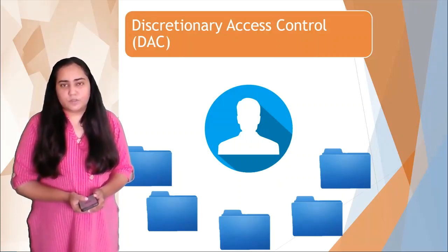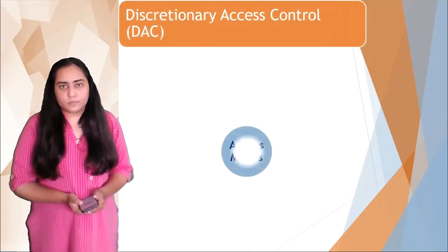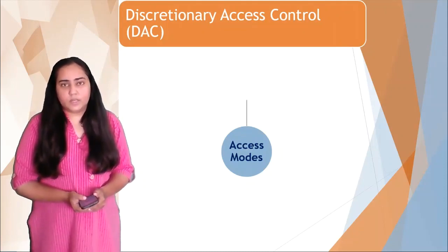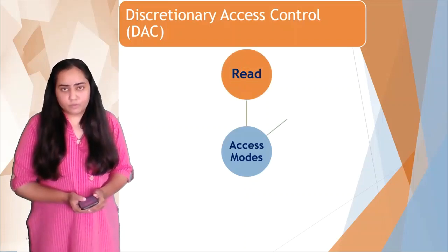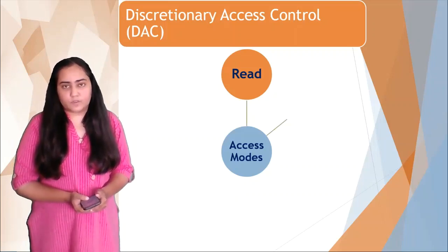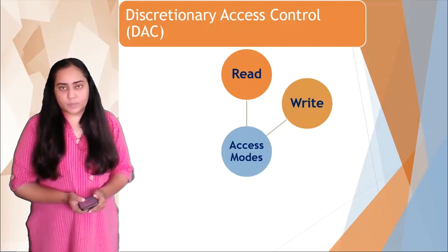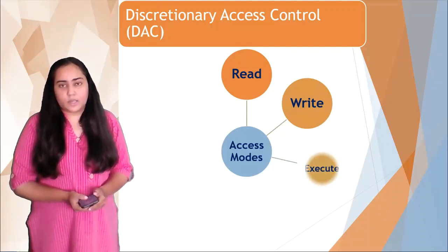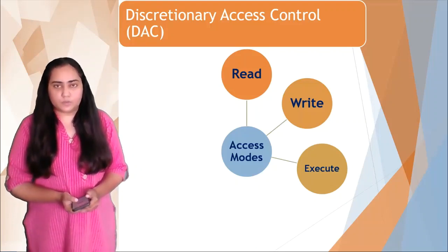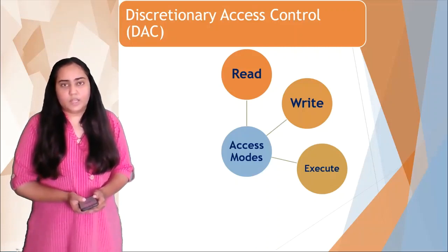Let's see what the different types of accesses are which can be provided for discretionary access control. The first access mode is the simple read mode, where the user can only read things from the file. Then there's the write mode, where the user can only write something into the file. Then we have the execute mode — if you have a .exe file and you allow the user to have execute access on that file, then the user can run that file.